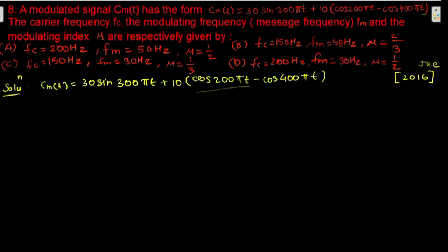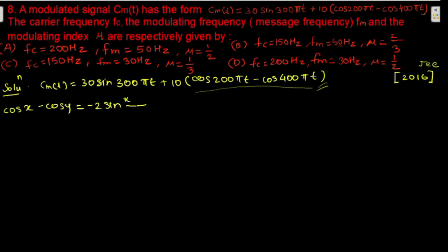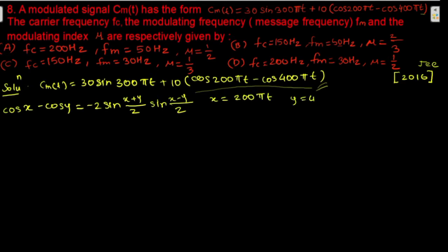We can simplify cos(200πt) − cos(400πt) using the trigonometric identity. The identity is: cos x − cos y = −2 sin((x+y)/2) · sin((x−y)/2). Here we let x = 200πt and y = 400πt.